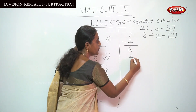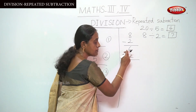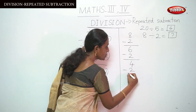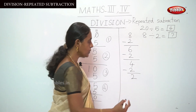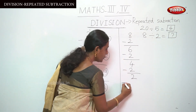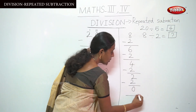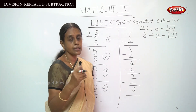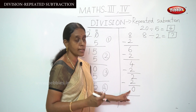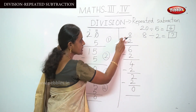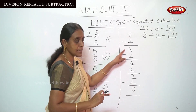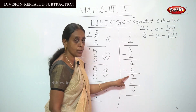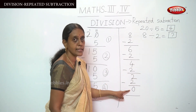Again put the number 2 and subtract 2 from 6, that is 4. And again put the divisor 2: 4 minus 2, the answer is 2. Again put 2: 2 minus 2, that is 0. Remember, you have to subtract the number until the answer will be 0.